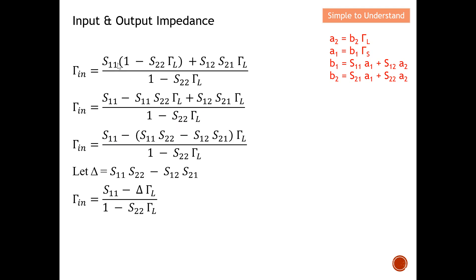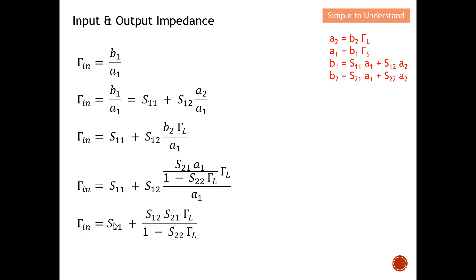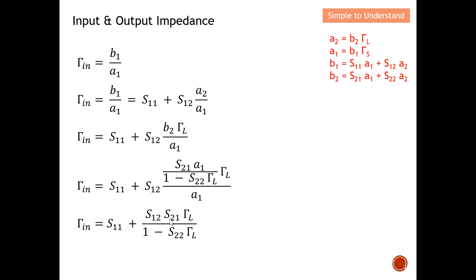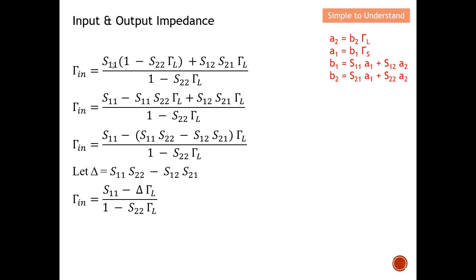To simplify further, I take the common factor with S11. Expanding the bracket gives: S11 - S11·S22·ΓL + S12·S21·ΓL. Taking the common factor of ΓL, the numerator becomes S11·(1 - S22·ΓL) + S12·S21·ΓL. I define delta (Δ) as S11·S22 - S12·S21. With this, I have successfully described the input reflection coefficient in terms of S-parameters.